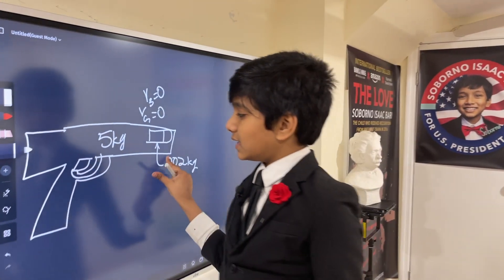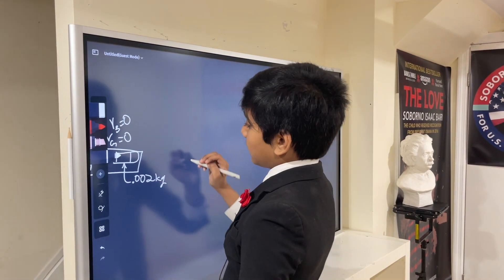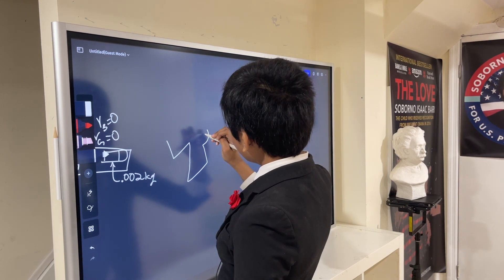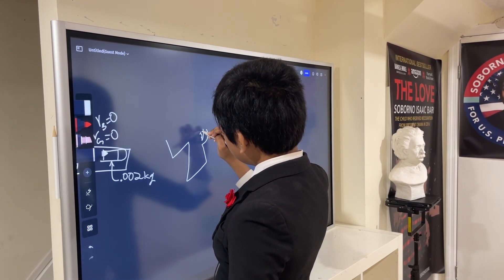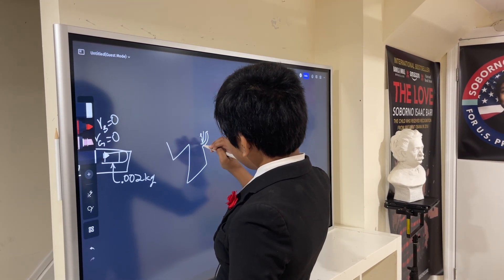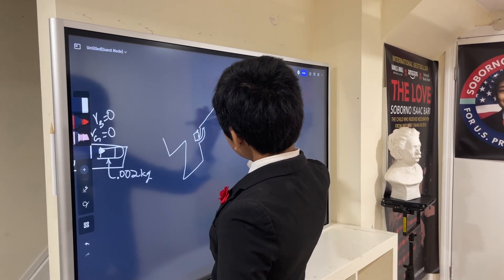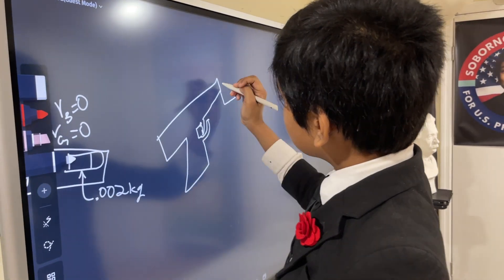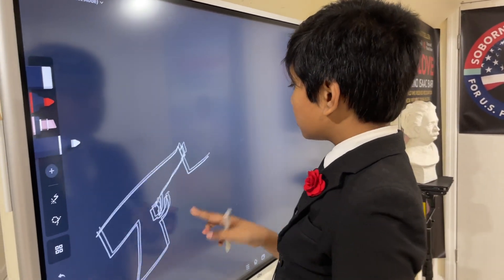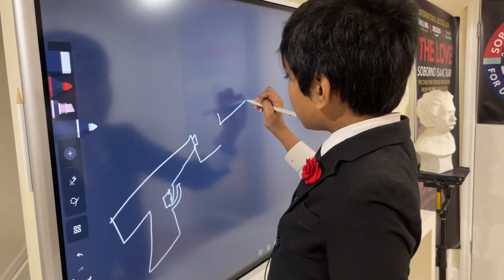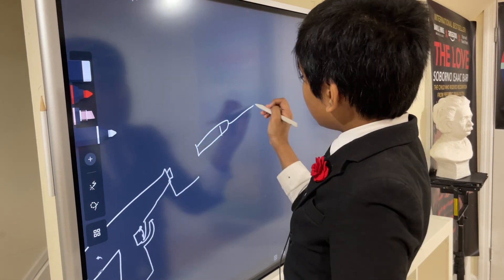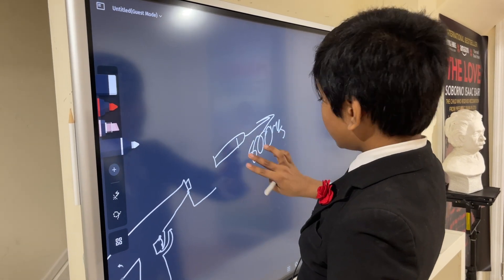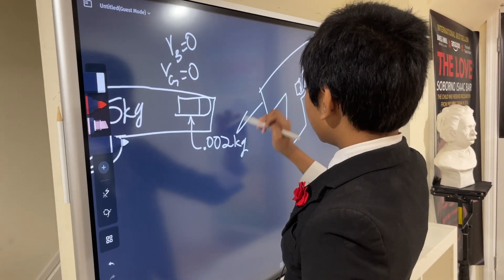So, the question is, after the gun is shot, then the bullet comes out. Let's just redraw the gun for a second. So, after the gun is fired... Not sure exactly what I'm drawing here. But, the bullet goes out at a velocity of 800 meters per second. If so, what is the recoil velocity of the gun?